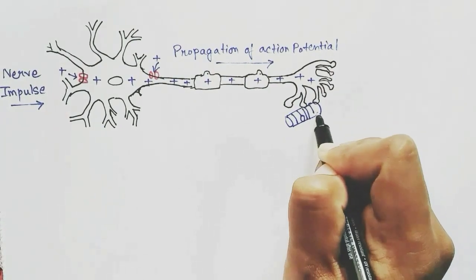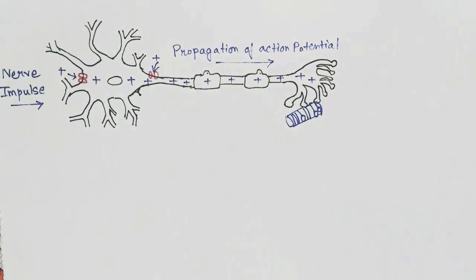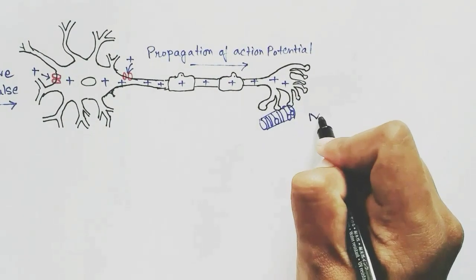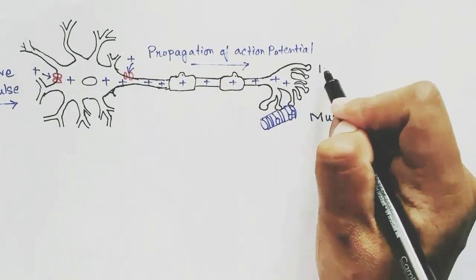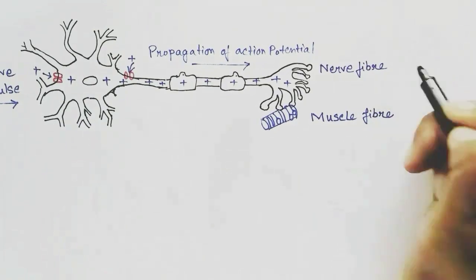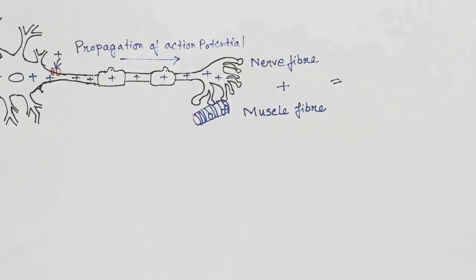The muscle is attached at the terminal position of the neuron. The muscle fiber and nerve fiber together are called the motor unit.